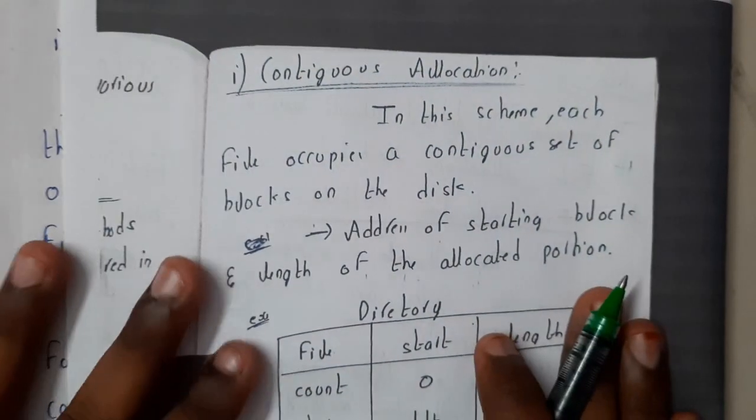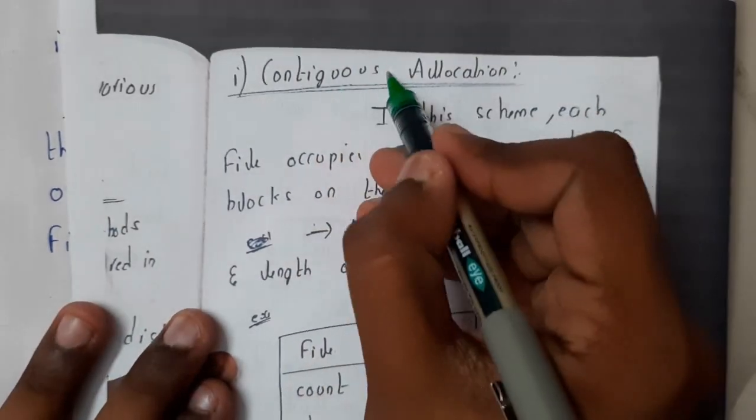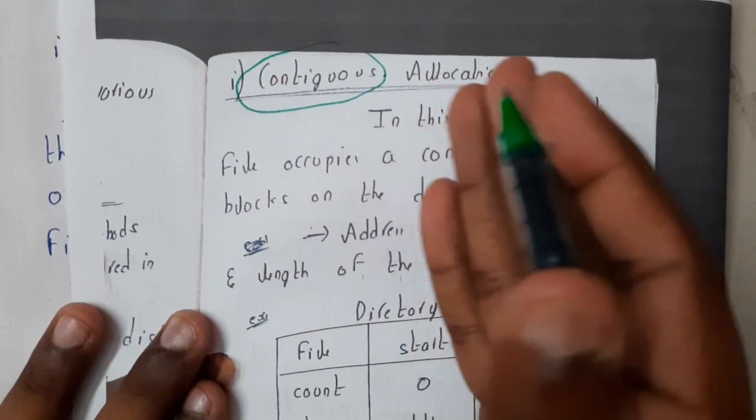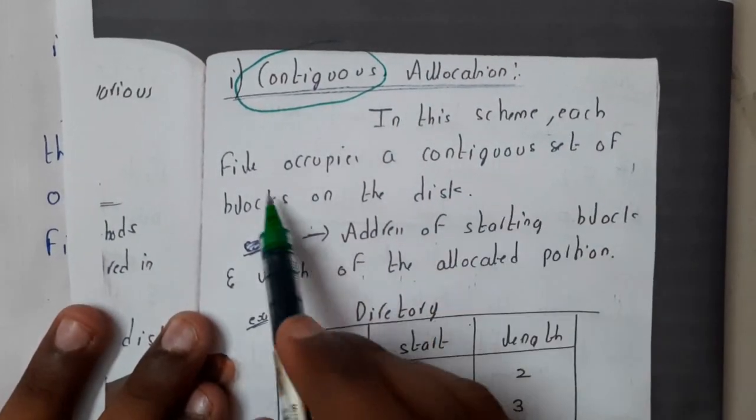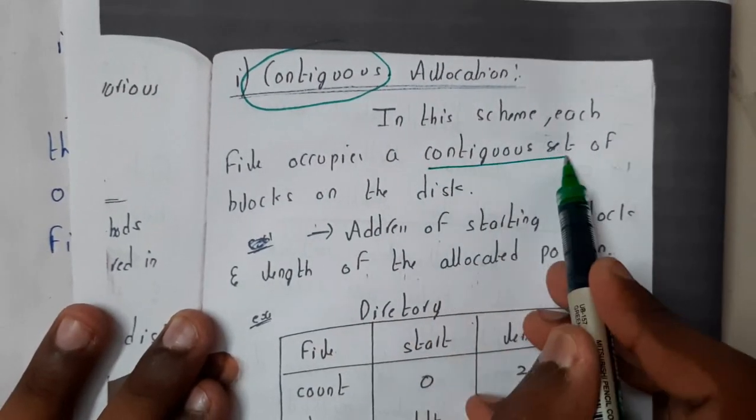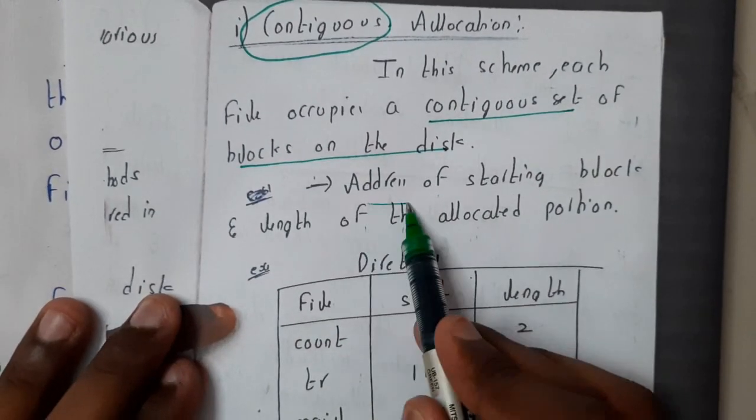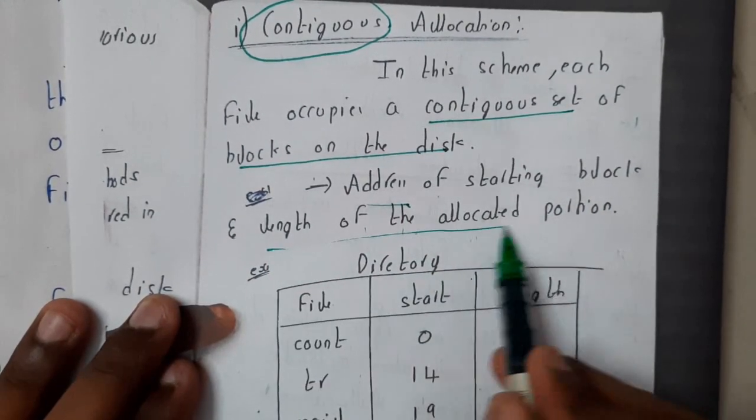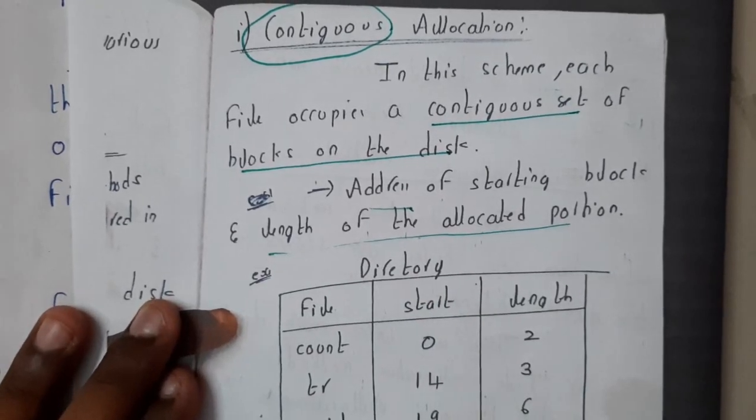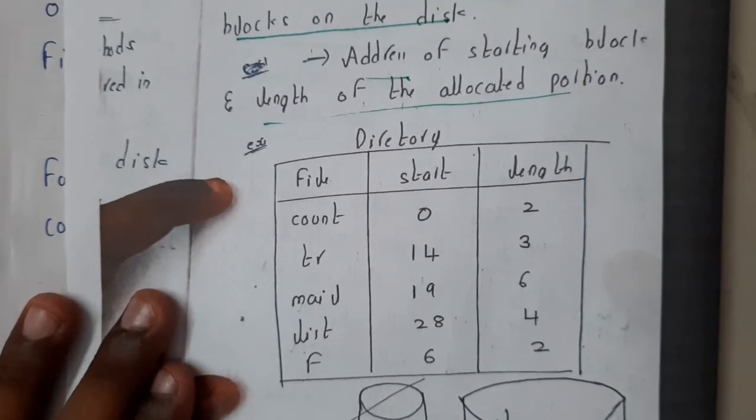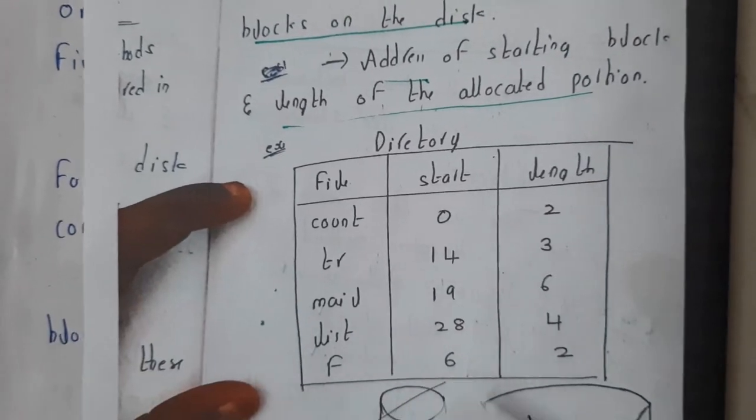Contiguous allocation - I told you the meaning of the word contiguous. We will be allocating one after the other. In this scheme, each file occupies the contiguous set of blocks in the disk. The starting block address and the length of the partition are mentioned. Let us assume this is a directory.